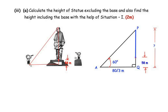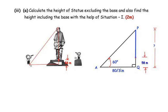Now, calculate the height of the statue excluding the base, and also find the height including the base using situation 1. Remember that the 240-meter height was given in situation 2; there was no height information given in situation 1. We need to find the height with and without the base. The figure shows the blue line as the statue height, PQ as the total height including the 58-meter base, the distance AQ as 80√3 meters, and angle of elevation as 60 degrees.